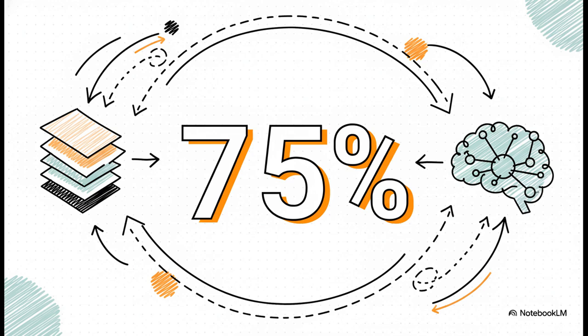And this is how it pulls off that incredible speed. A 75% reduction in that heavy KV cache notebook we talked about. By literally ditching three quarters of that baggage, the model becomes lighter and so much more agile. This is a huge leap in efficiency.